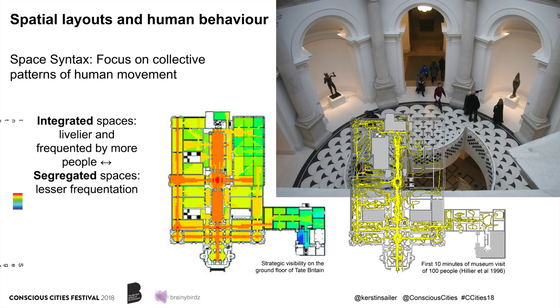Integrated spaces, shown in warmer colors, will attract more people moving about; cooler colors indicate segregated spaces with lesser frequentation. That was one of the starting points of space syntax, but space syntax is quite a diverse and vibrant research community. We do all sorts of research that look quite detailed into the human condition — we are not just interested in collective patterns of movement. I want to show some research examples from my work where we look at more detailed human behaviors, trying to find ways to talk to other behavioral sciences and contribute from an architectural point of view.